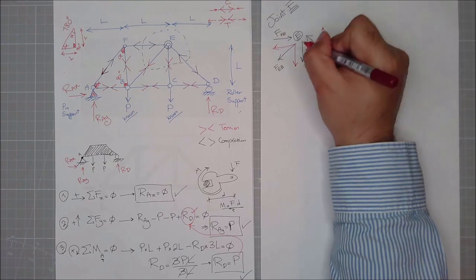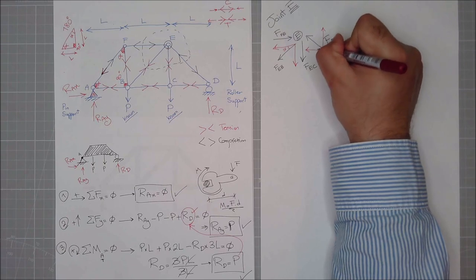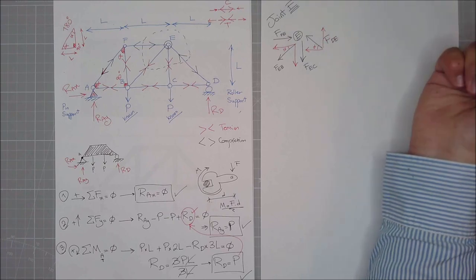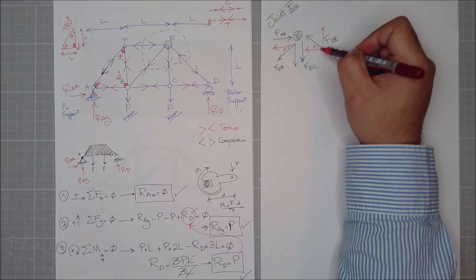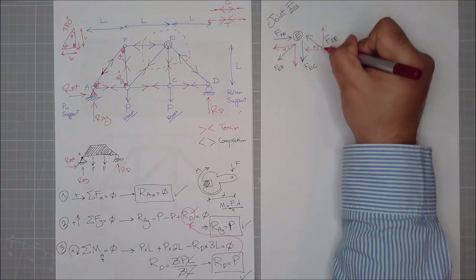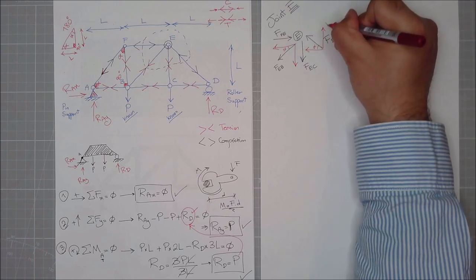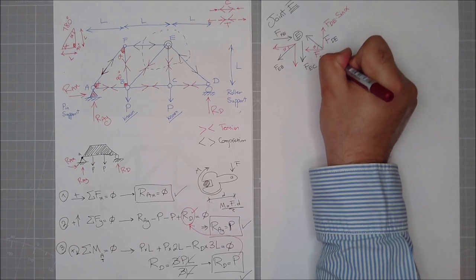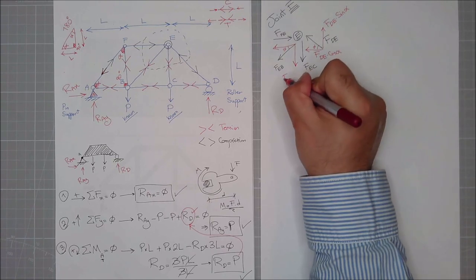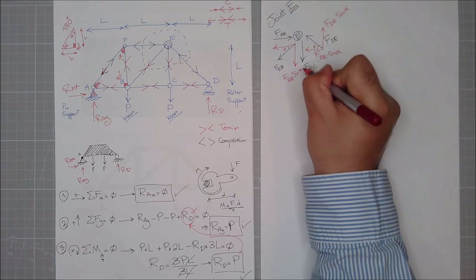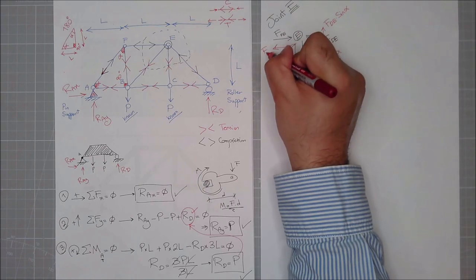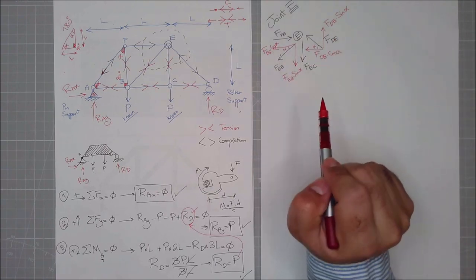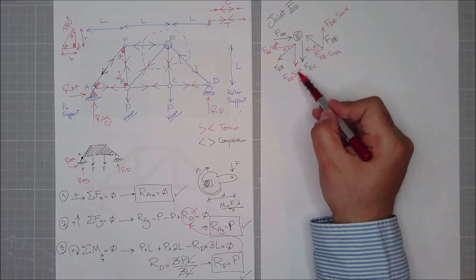I assume this is alpha, and I assume this is alpha. Both of the angles are the same, so it really doesn't matter. But even if I didn't know what the angle was, I can give it in parameters and simply figure it out. This will be FDE sine of alpha, this will be FDE cosine of alpha, this will be FEB sine of alpha, and this will be FEB cosine of alpha. Whatever force is beside the angle, we put it as cosine; whatever the other one is, we put it as sine of alpha.